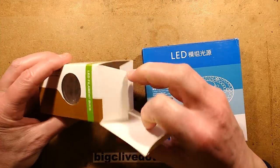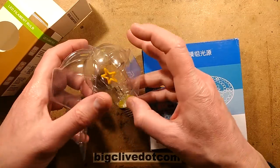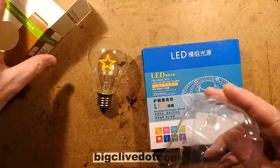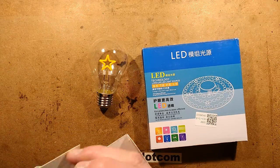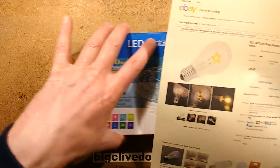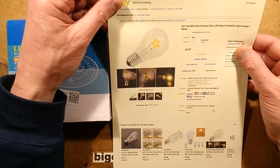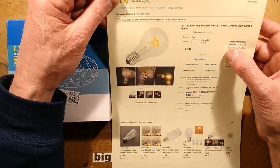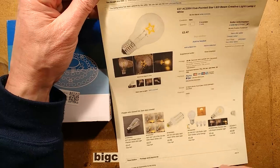The other thing that I thought was very interesting was this filament lamp. It's got a star shaped filament. It's listed as E27 220 volt 5 pointed star LED beam creative light lamp from the same supplier x-web-top, although it seems to be a very common item.